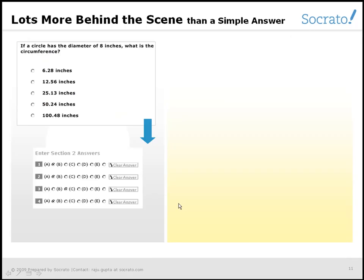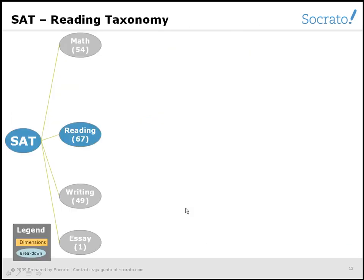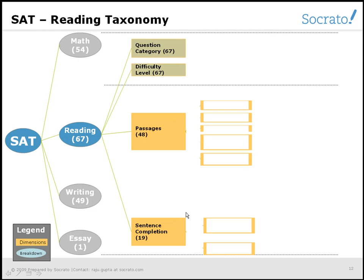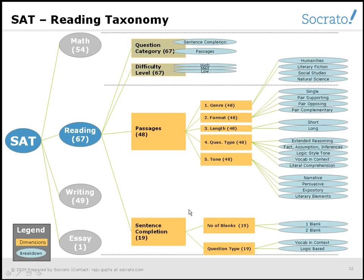The big idea behind Socrato is that it understands that for each question there is a lot more behind-the-scenes information. Socrato tracks and organizes this information in simple and hierarchical structures called taxonomies, then correlates student responses of similar questions against these taxonomies to triangulate the root causes of performance gaps.